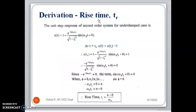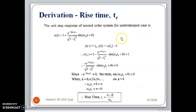Now we need to derive all these specifications. We have the derivation for the time domain specifications: delay time, rise time, peak time, overshoot, and settling time. For rise time, the first equation will be based on the step response of the second order system in the underdamped case.